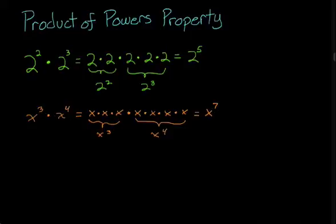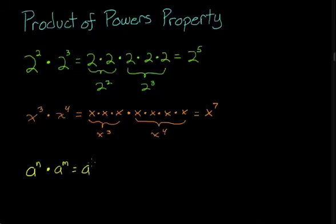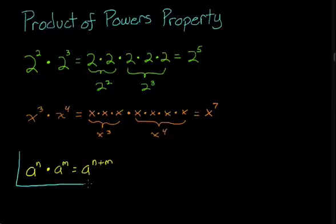We can generalize this with the following rule. Using a general variable: a to the n times a to the m equals a to the n plus m. So you just add the exponents if all of your terms have like bases. And that is our product of powers property.